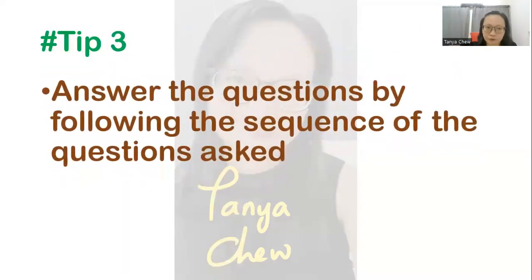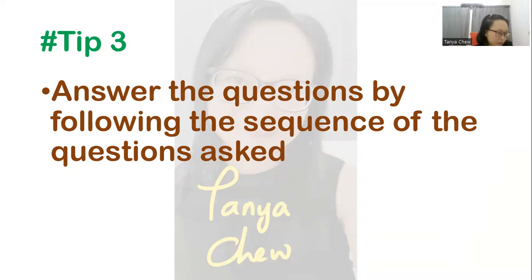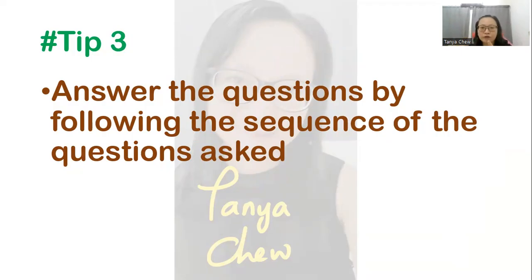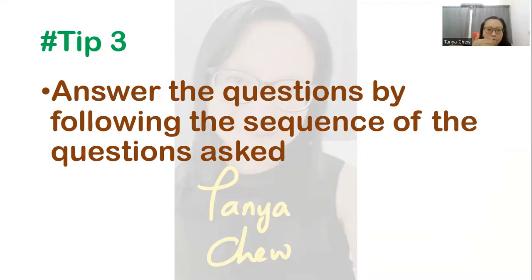Tip number three: answer the questions by following the sequence of the questions asked. When they ask you to explain briefly how the experiment should be conducted or investigated, just follow that first — give the method first. Then after that, when they ask you to state the key variables, state the key variables. Follow the instructions one by one.